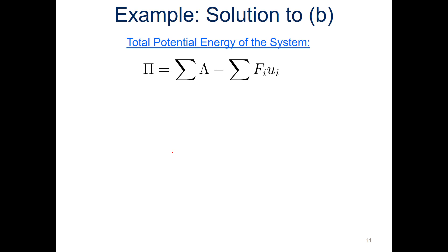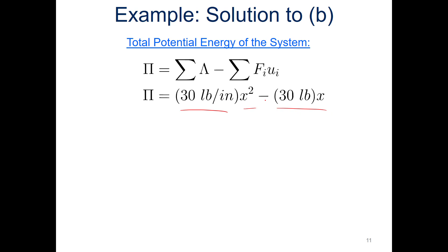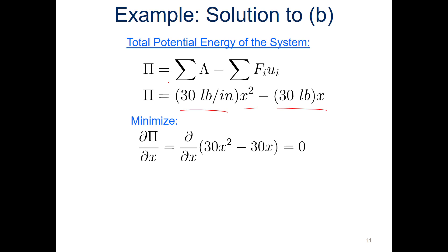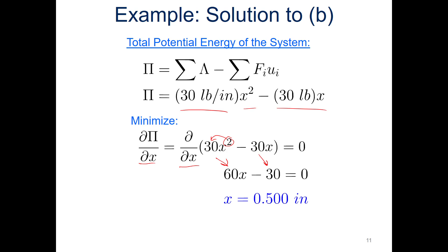Substituting back into the total potential energy formulation: the strain energy term gives 30x squared and the work term gives 30x. To minimize — because it's the minimum total potential energy — we differentiate with respect to x and set equal to zero: 60x minus 30 = 0. Solving for x gives x = 0.5 inch, which matches the FBD and statics approach.